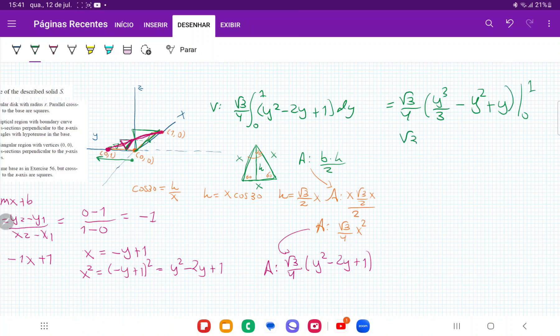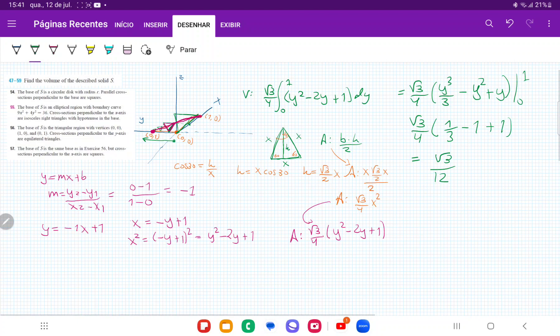When we plug in the boundaries, this is just going to give us root 3 over 4. The 0 disappears, so we only have to be concerned with the upper part, so that's 1/3 minus 1 plus 1, which is equal to root 3. These two cancel out, so it's just going to be root 3 over 12. And that's the volume that we get when we sum up these triangles from 0 all the way to 1 on the y-axis.